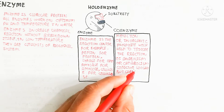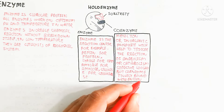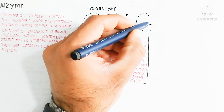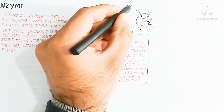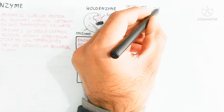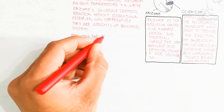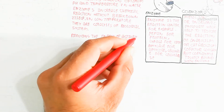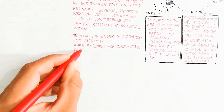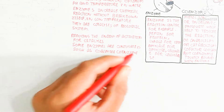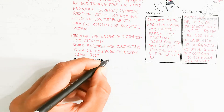A cofactor is loosely bound, but a coenzyme is tightly bound to the enzyme. The apoenzyme is the enzyme without the coenzyme or cofactor — it is incomplete on its own. Enzymes reduce the activation energy for catalysis, meaning low temperatures can trigger enzyme activity. Some enzymes are conjugated, such as cobamide coenzyme and lipoic acid.